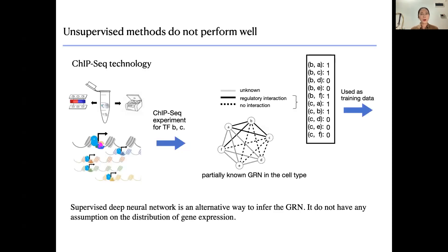Because these algorithms are unsupervised and have wireless assumptions for their data distribution, we are thinking about using a supervised method to predict GRNs for cell-type specific data. We can use ChIP-seq technology for certain TFs to get a partially known GRN in a cell type, and the known interactions for some TFs can be used as training data to train a deep neural network. After the model is trained, we can predict the remaining pairs to get the whole GRN.